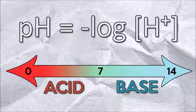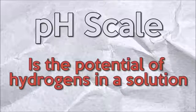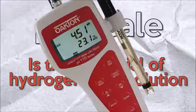This little scale is known as the pH scale, which is the potential of hydrogens on a solution. And that's what this baby measures.